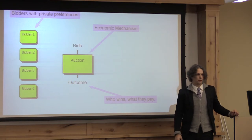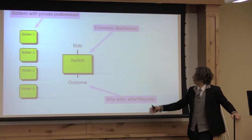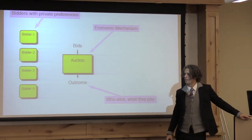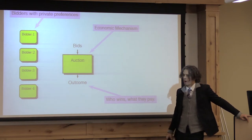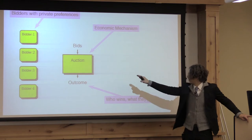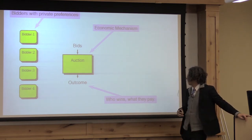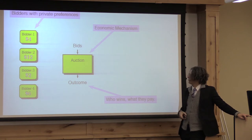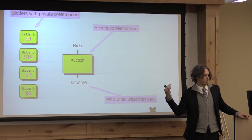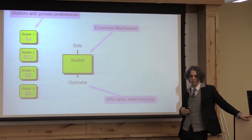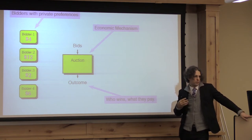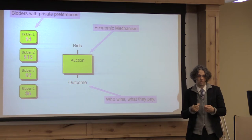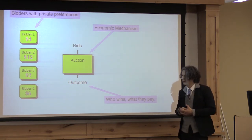Here's something that might happen in one of these online marketplaces — maybe eBay. I have bidders with private preferences, and they're going to bid in this auction — an economic mechanism. The auction decides from the bids who wins and what they pay. These bidders have in mind what the thing being sold is worth to them: bidder one thinks it's worth $4, bidder two thinks it's worth $12. But of course they're competing, so they're strategizing about how to bid to get a good outcome.